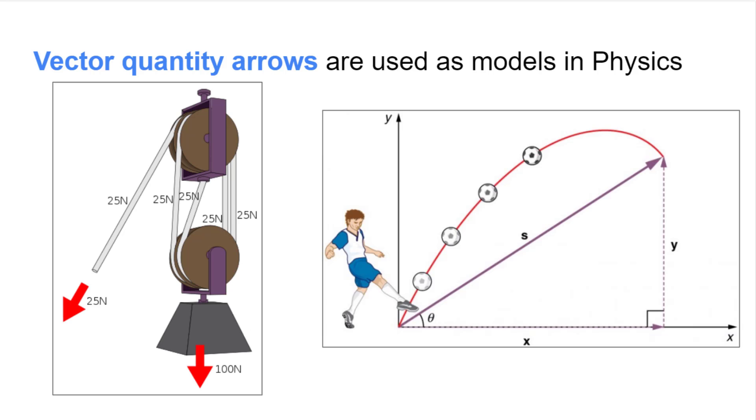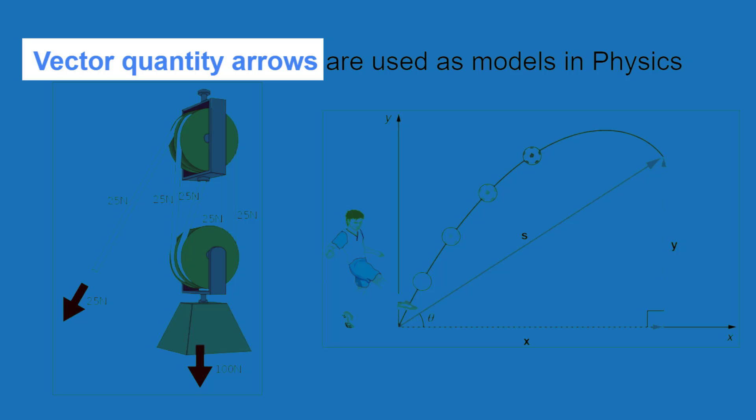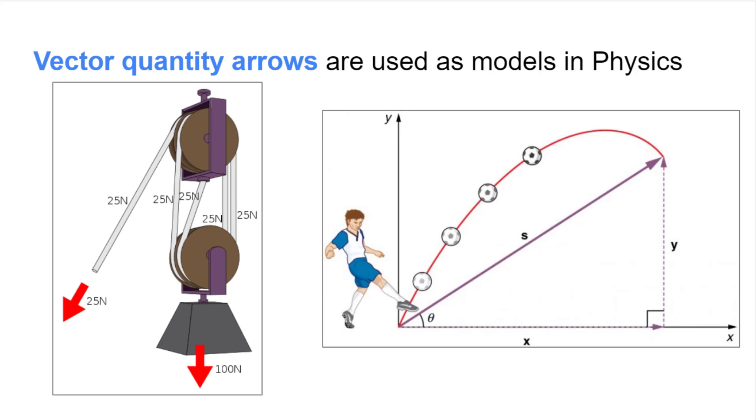One extremely important feature about vector quantities in physics is the ability to use them as models for different quantities like force, velocity, and acceleration. Arrows are used to represent vector quantities in physics, and with appropriate use of geometry and trigonometry, physicists are able to calculate unknown information from the quantities they do know.